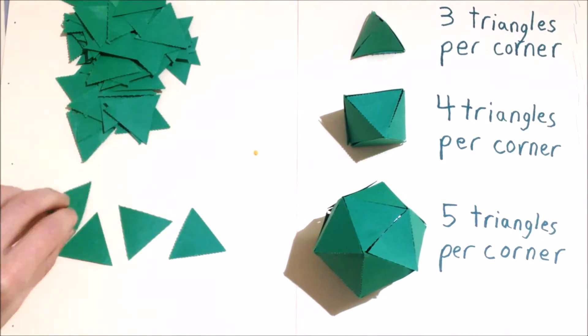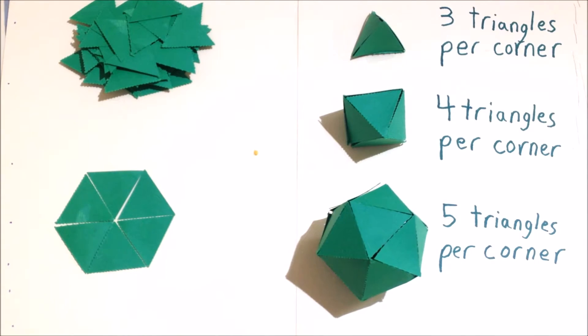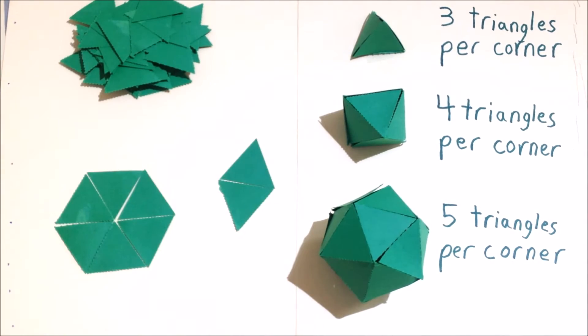Putting six triangles at each corner doesn't work very well for making 3D shapes, and two triangles at each corner really doesn't work either.